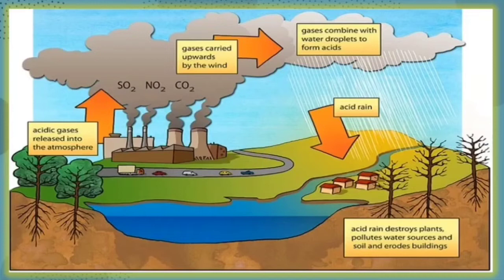Acid rain is very dangerous to every living and non-living thing. Acid rain harms trees and crops. It kills fish and aquatic plants in lakes and rivers. It causes respiratory diseases in humans who happen to inhale it directly. Acid rain also causes the decay of concrete structures, the corrosion of materials made of metals, and destroys many historical spots and structures all over the world.